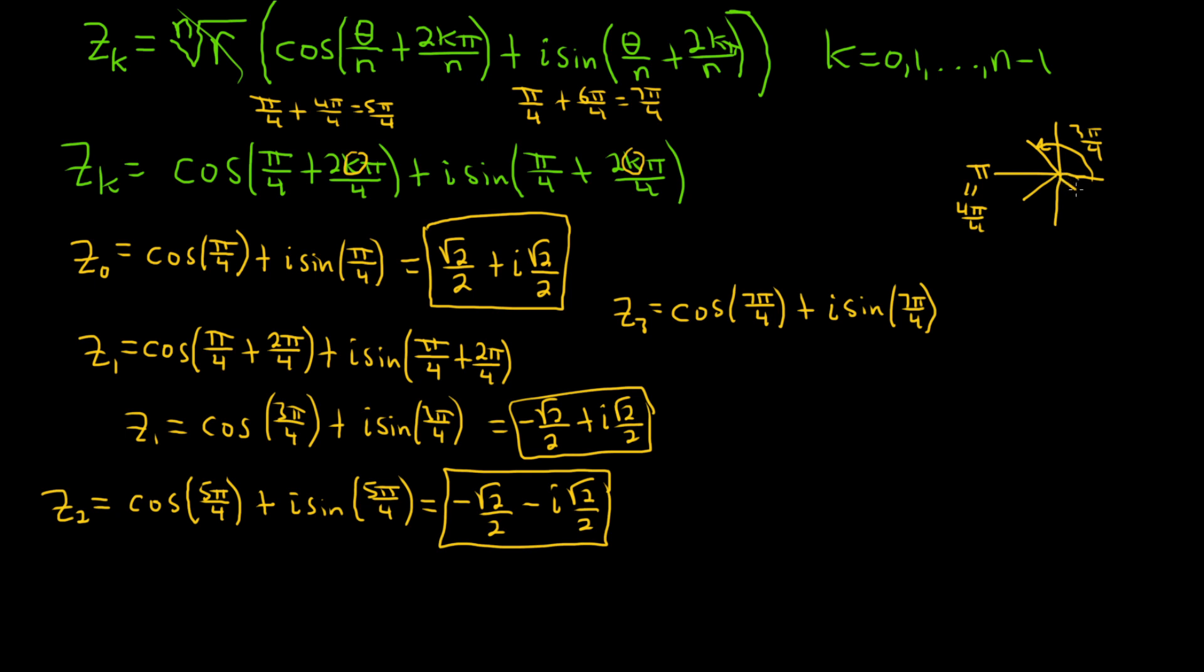This will be the cosine of 7 pi over 4 plus i sine of 7 pi over 4. And that's over here, and that's because this is 2 pi, which is 8 pi over 4. So it's pi over 4 less. Here in this angle, the cosine will be positive and the sine will be negative because cosine is the x-coordinate and sine is the y-coordinate on the unit circle.